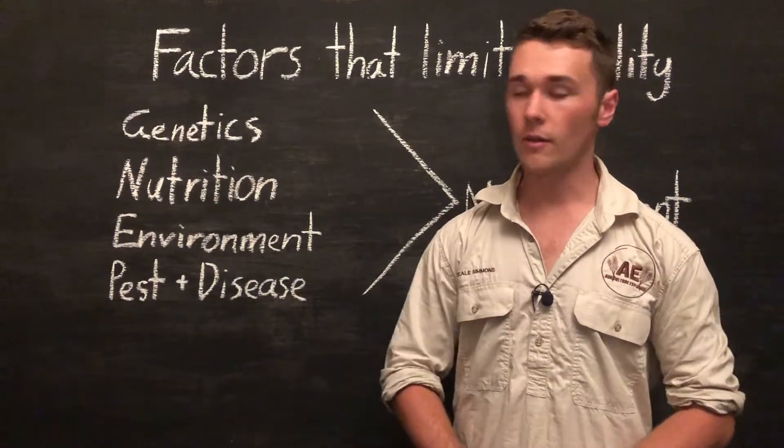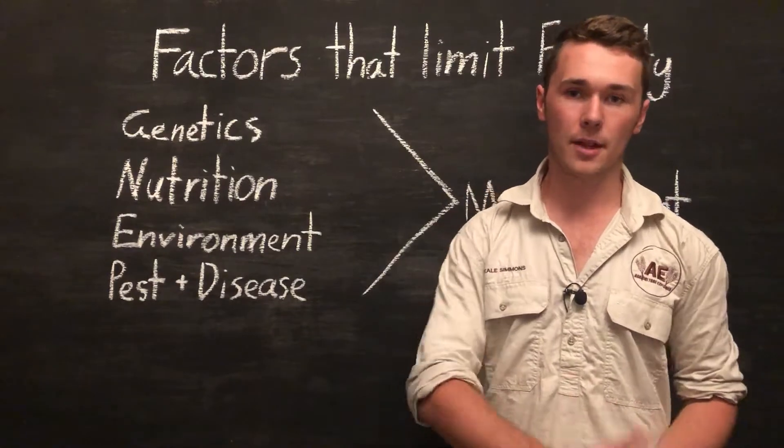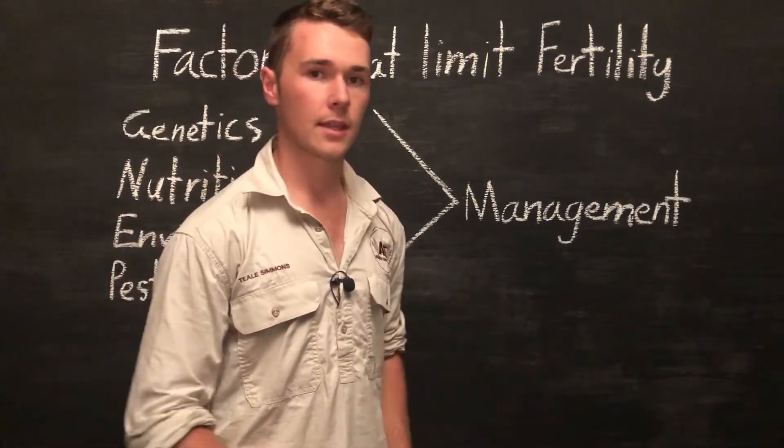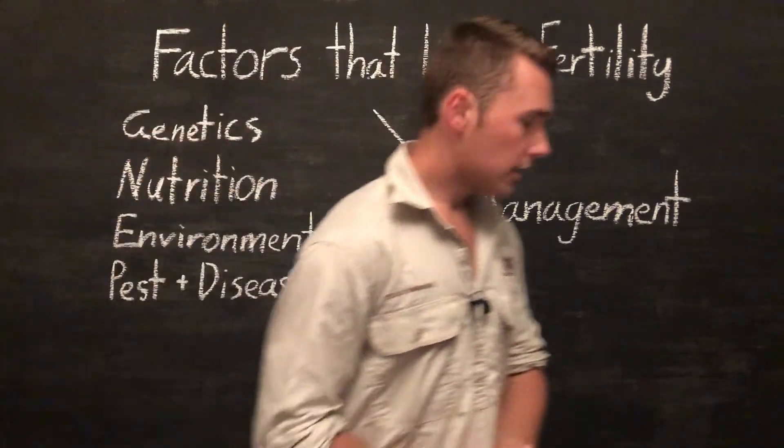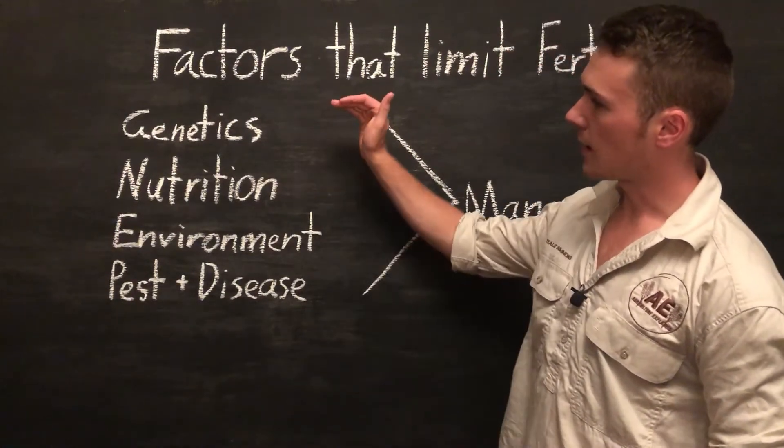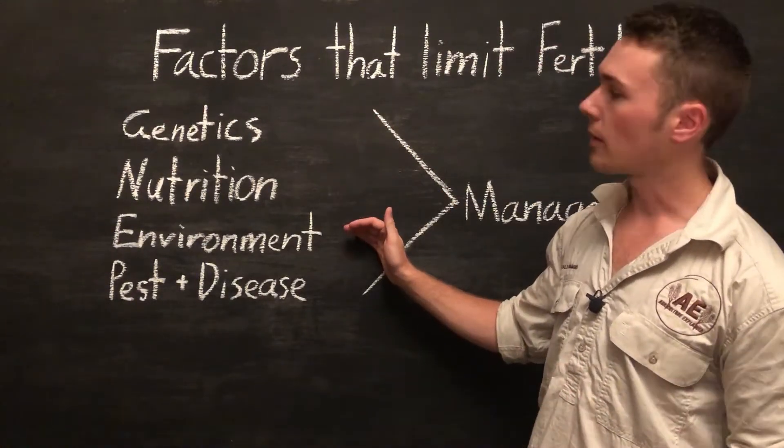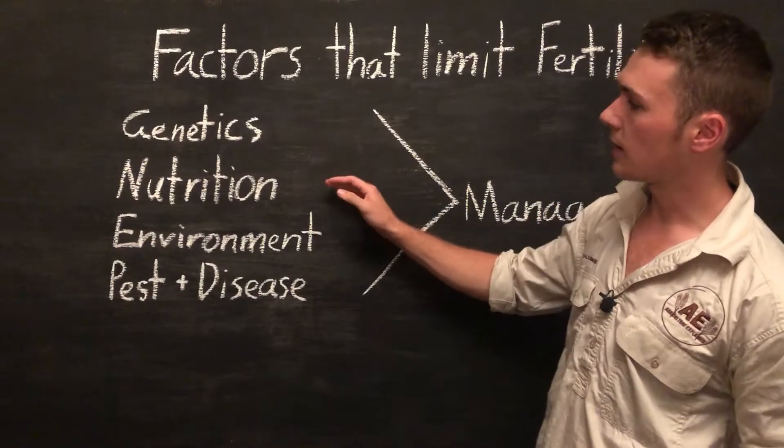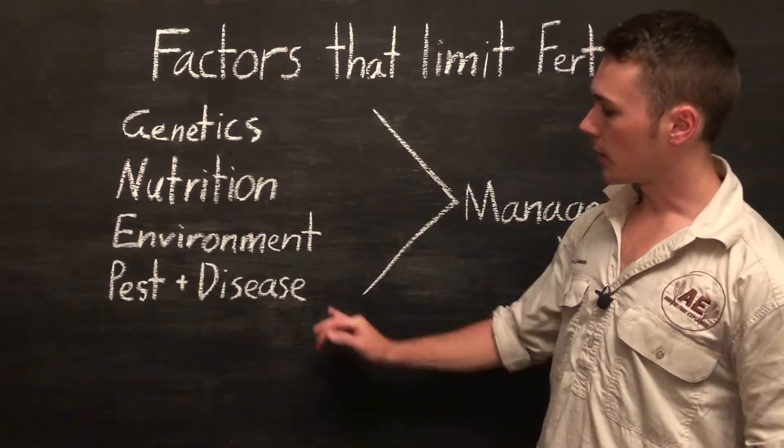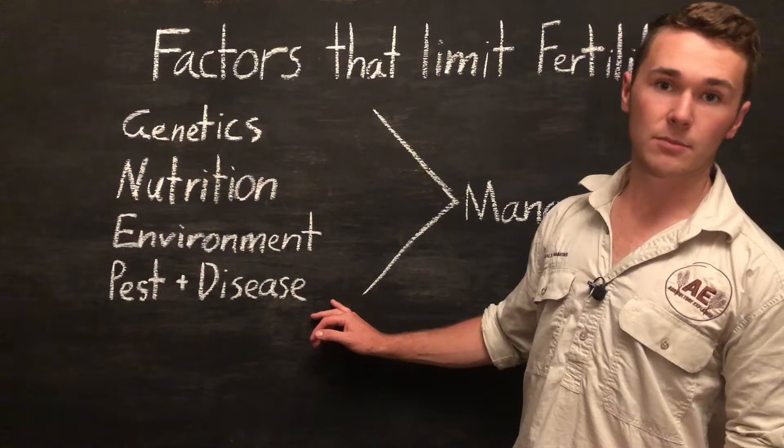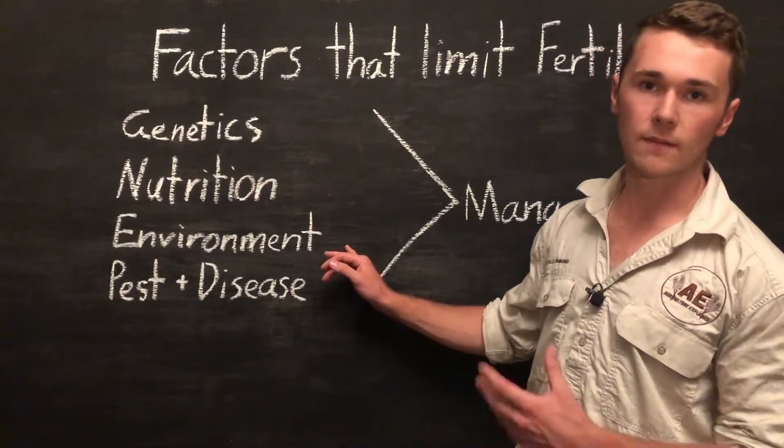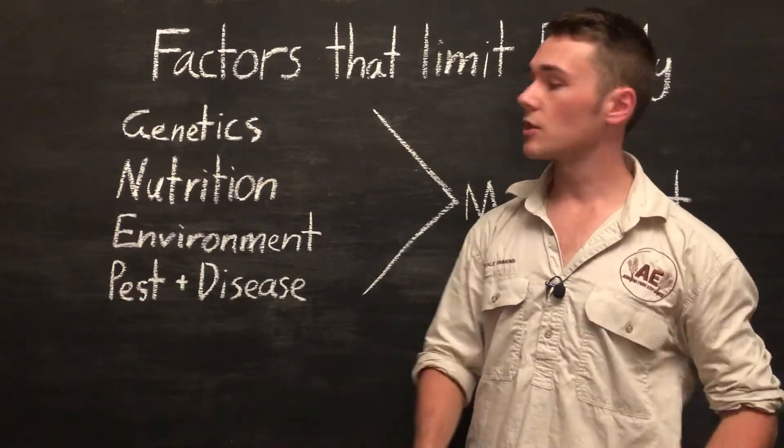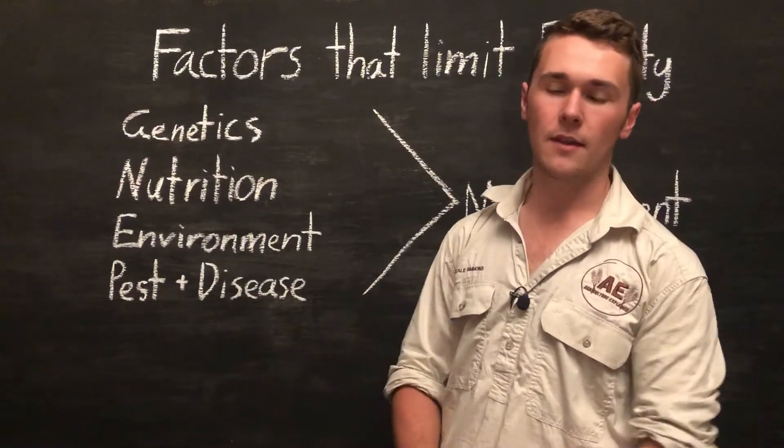Our last factor is very dependent on the farmer and their knowledge of the operation that they're running. And it is management. So management pretty much takes into the decision making that affects all of our other factors. So the management will allow us to alter different factors of our operation. It can change our genetics, so changing the breeds or picking better breeding stock. It can change the nutrition for our animals. We can introduce different vaccination programs or worming programs. And we can change the environment for our animals or change the breed to have more suited to the environment. So essentially it allows us to mitigate or change different factors for our farm.